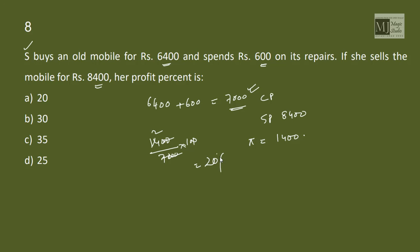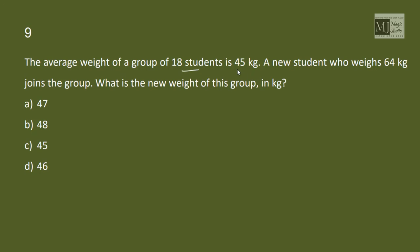The average weight of a group of 18 students is 45. For 18, average is 45 kg. A new student comes in who weighs 64 kgs. What is the new weight of the group? So now we have 19 people. 45 into 18 is 810 plus 64 is 874, so the new average is 874 by 19 that equals 46. Option D.